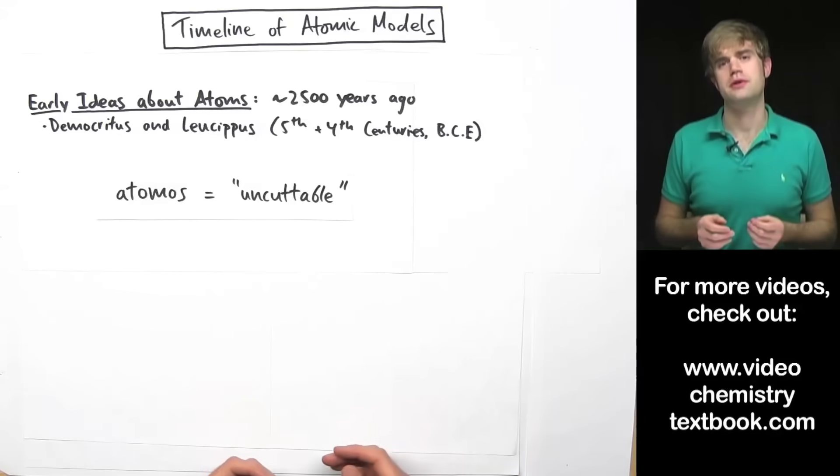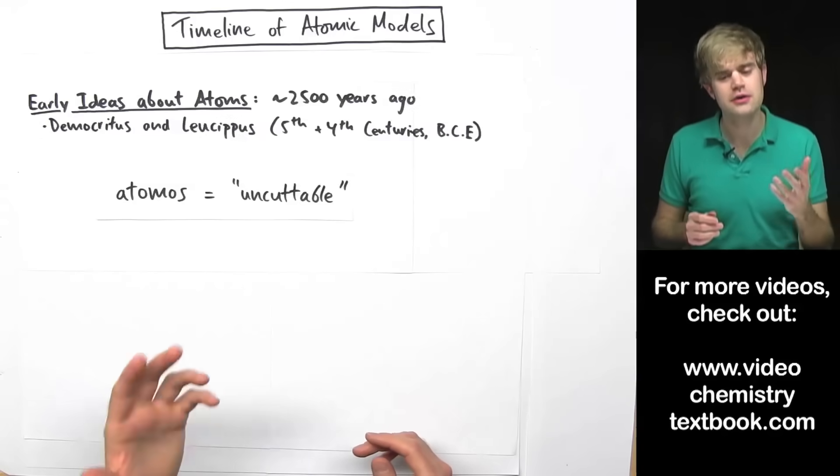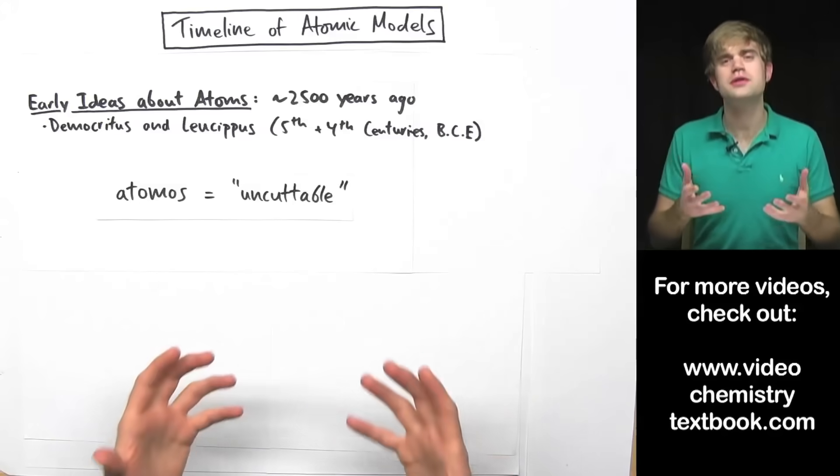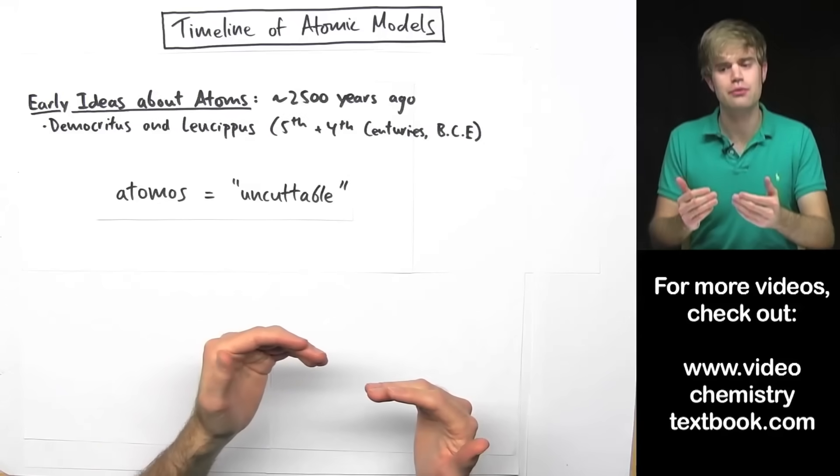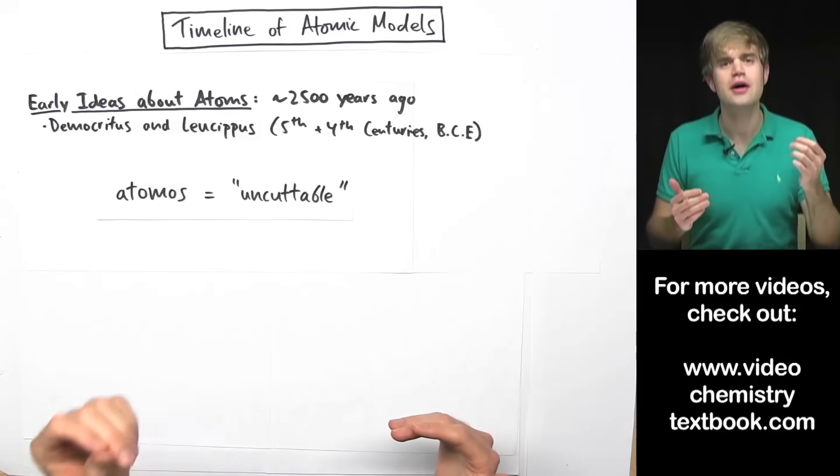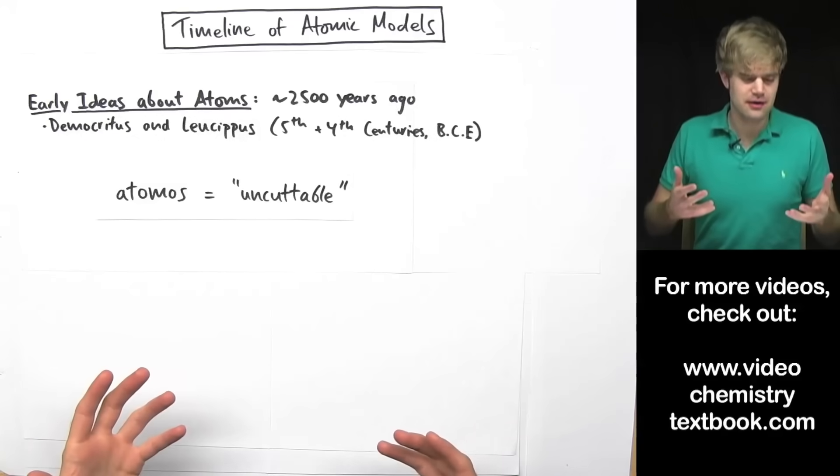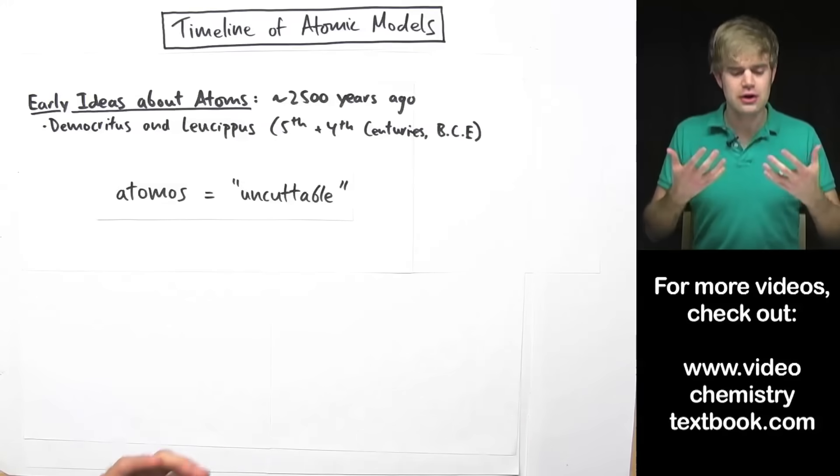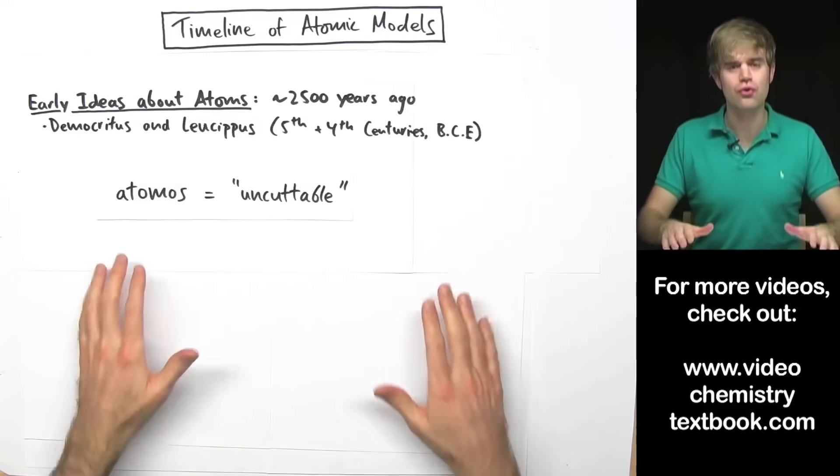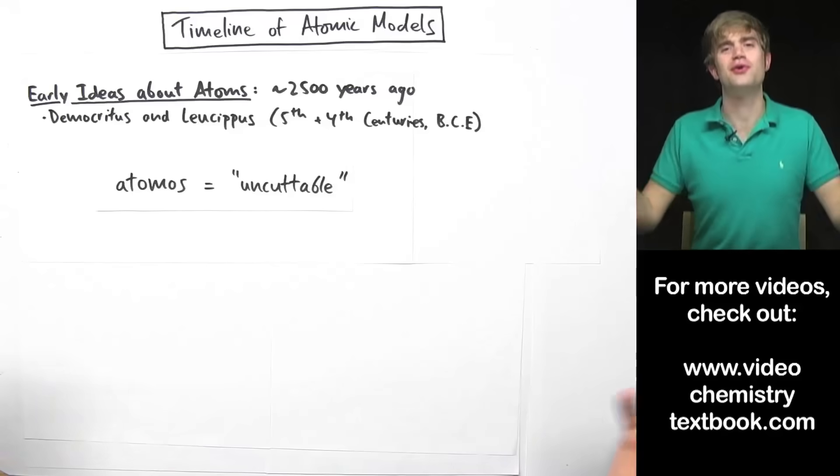So Democritus and Leucippus, they were right all along. But here's the thing. They weren't scientists. They couldn't do experiments in the laboratory to prove that they were right. And because of this, some people think that their idea was just kind of a lucky guess. They couldn't actually prove what they thought. So, you know, how can you tell whether it's right or wrong?